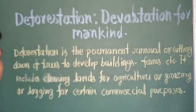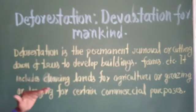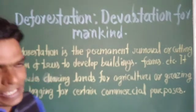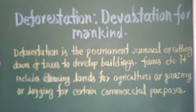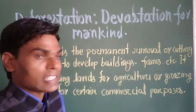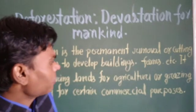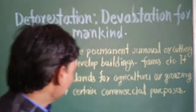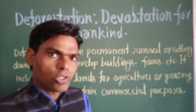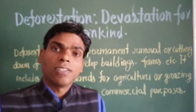What is the meaning or definition of deforestation? Deforestation is the permanent removal or cutting down of trees to develop buildings, farms, etc. It includes clearing lands for agriculture, grazing, or logging for certain commercial purposes. This is the definition of deforestation.